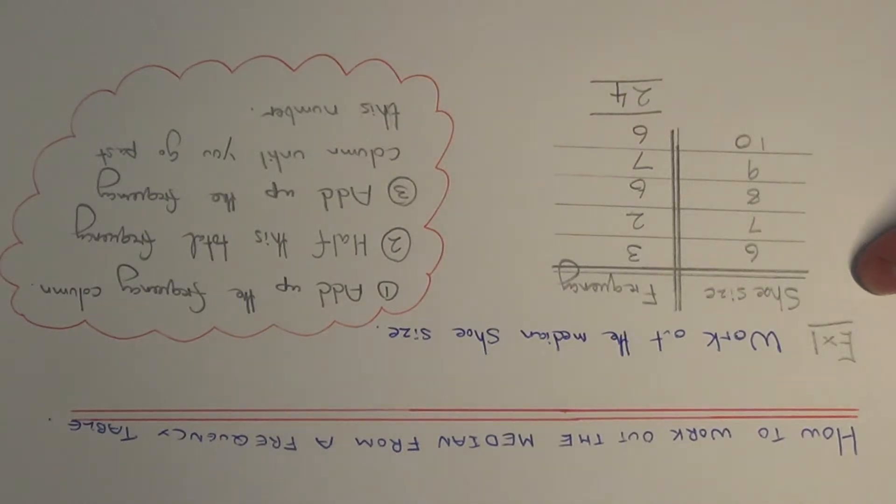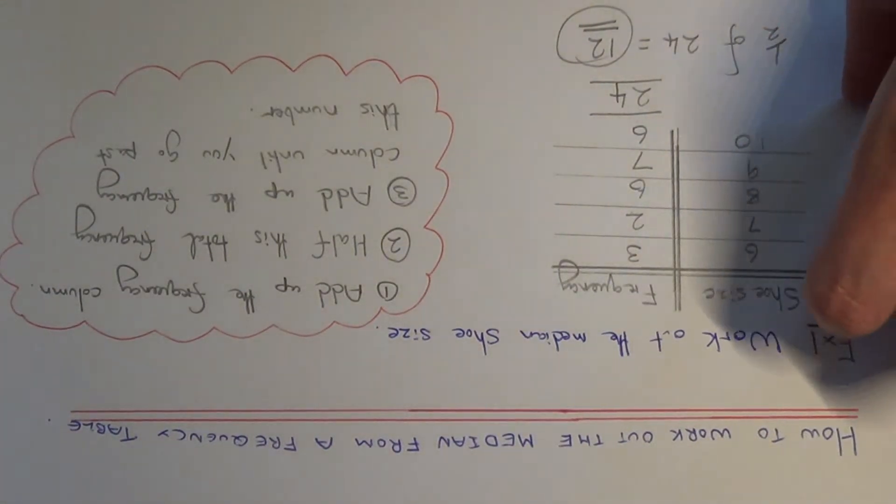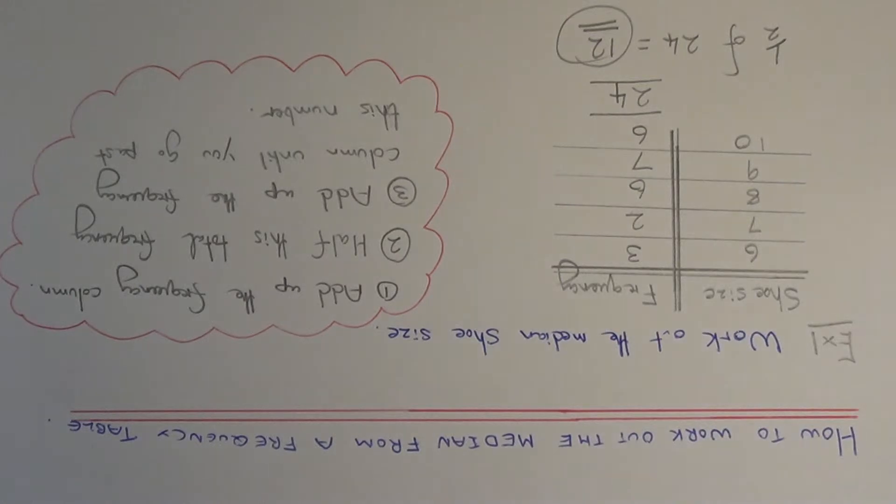So what we need to do next is work out half of 24, which gives us 12. So our median occurs on the 12th person from the top of the table.